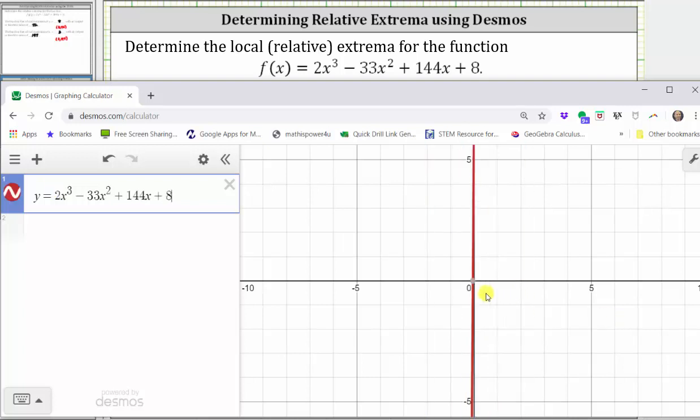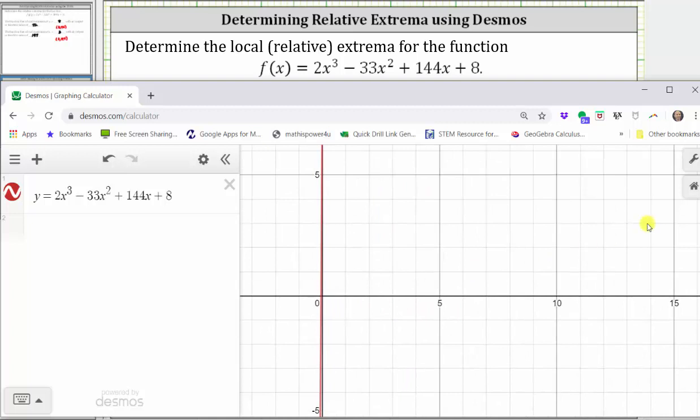Notice right now we do not have a good window for the polynomial function, because we do not see the high and low points. Let's click, hold, and drag the graph to the left. And now let's click on the wrench to adjust the window.